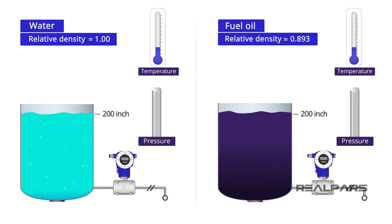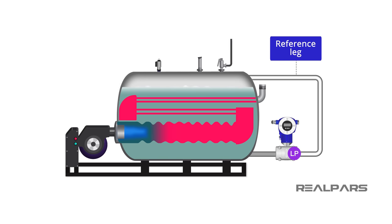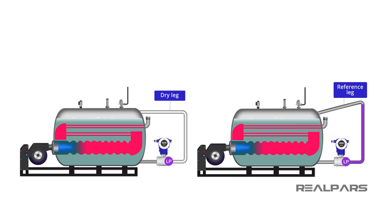Let's review what we have discussed. Liquid relative density and temperature have a significant effect on differential pressure transmitter level measurements. A reference leg is used to compensate for vapor pressure in closed vessels. A dry reference leg is called a dry leg. A wet leg is a reference leg filled with a liquid different from that in the vessel.